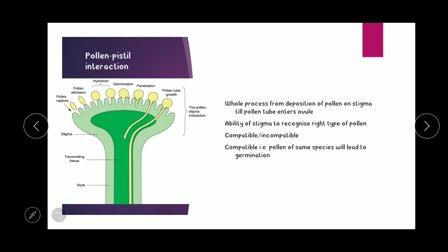What is pollen-pistil interaction? As the name suggests, this is the interaction between pollen and the pistil. It includes the whole process from the deposition of pollen grain on the stigmatic surface of the pistil to the growth of the pollen tube up to the ovule. The stigma has the ability to recognize the compatible type of pollen grain. A number of pollen grains may land on the stigma, but only pollen from the same species will lead to pollen tube growth and germination — this is the compatible pollen grain. Pollen from a different species is incompatible.